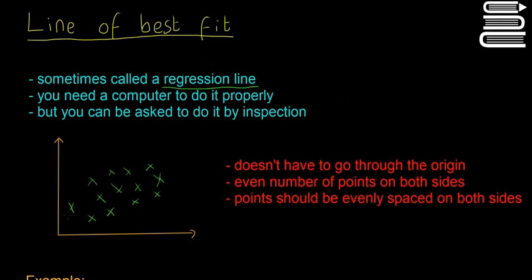So if we were to plot a line of best fit through these green points here, there's a couple of rules we should follow. First of all, it doesn't have to go through the origin. Some people always try to put through the origin, but that isn't always the case. There should be an even number of points on both sides of the line, and points should be evenly spaced on both sides of the line as well.